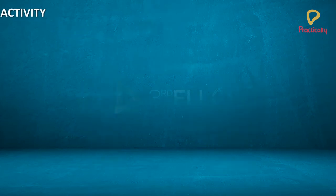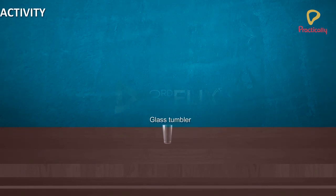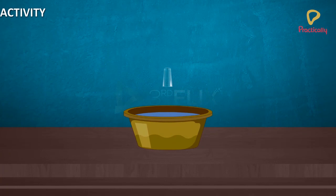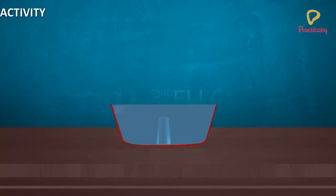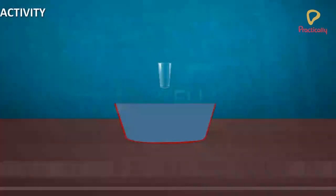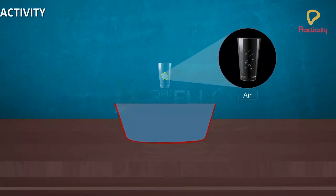Activity. Take an empty glass tumbler and observe it. Can you find something inside it? No. Turn the glass tumbler upside down and tip it in a tub full of water. Does the air get inside the tumbler? No. Just tilt the tumbler and we can see the bubbles coming out of it. Now what is really inside the tumbler? It is the air inside the tumbler. Air occupies space inside the tumbler.